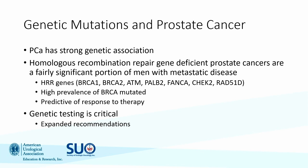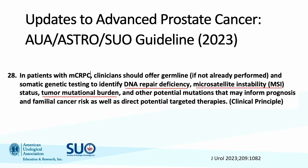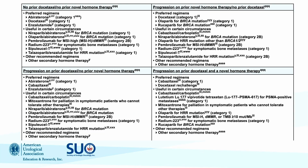Since 2016 there have been really expanded recommendations for genetic testing, critical for providing personalized medicine and individualized care. The updated 2023 guideline recommends we offer — if not already performed — both germline and somatic testing to identify DNA repair deficiencies, microsatellite instability, and tumor mutational burden, because of prognosis, potential targeted therapies, and cascade testing that may benefit family members.